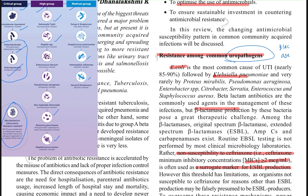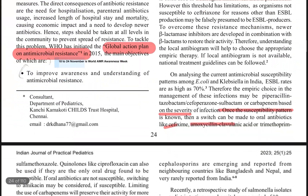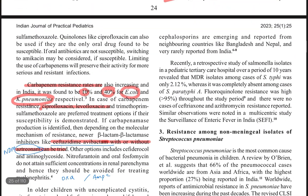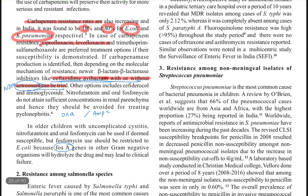To summarize uropathogens: start with beta-lactam, then beta-lactamase resistance leads to beta-lactam/beta-lactamase inhibitor combinations, then if resistance continues, move to carbapenem, then if carbapenem resistance, consider fluoroquinolones or check which carbapenemase is produced to decide between ceftazidime-avibactam plus aztreonam or ceftazidime-avibactam alone. Fosfomycin for UTI can be used in uncomplicated cases but only for E. coli.